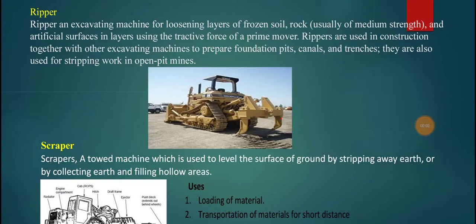In this video we are going to discuss about rippers and scrapers and all other construction equipment. We have already discussed about the bulldozer and the tractor. A ripper is basically an excavating machine for loosening layers of frozen soil or rock and artificial surfaces, using the tractive force of a prime mover.